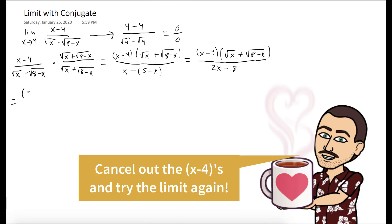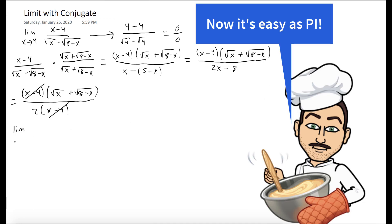And now notice, you could factor out a 2 from the denominator, and we'll have 2 times x minus 4 as our new denominator. And so we could cancel out the x minus 4 in the numerator with the x minus 4 in the denominator. And now we could try to evaluate the limit again.